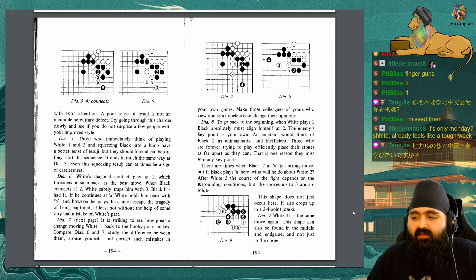Diagram 7: It is striking to see how great a change moving white 1 back to the booby point makes. Compare Diagram 6 and 7. Study the difference between them. Arouse yourself and correct such mistakes in your own games. Make those colleagues of yours who view you as a hopeless case change their opinions.